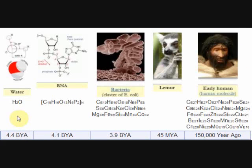Each entity is comprised of a specific number of elements in various numbers. Water: two elements, three atoms. RNA: five elements, several thousand atoms.